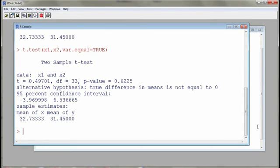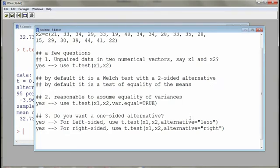Now if we are interested in a one-sided alternative, we could add another argument which describes the alternative. Either it's alternative equal to 'less', this is a left-sided alternative, or alternative equal to 'greater', and this is a right-sided alternative.